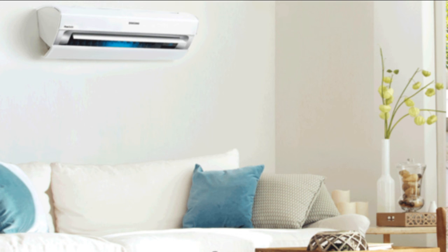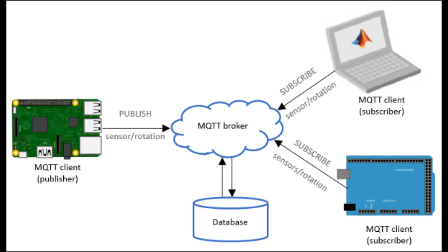First, I will tell you how this is going to work. There will be a publisher like Google Assistant when you are sitting in your car and you want your AC to be switched on in your room. You will give a command like 'switch on my AC' or 'turn on my AC' about 20 minutes before reaching your room, and you will use your Google Assistant to switch on your AC.